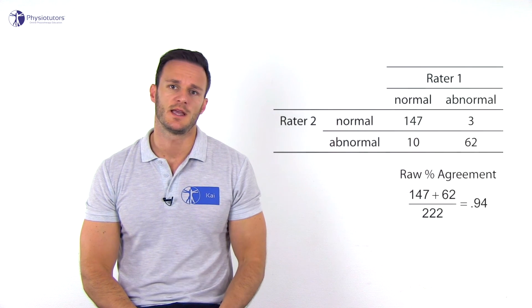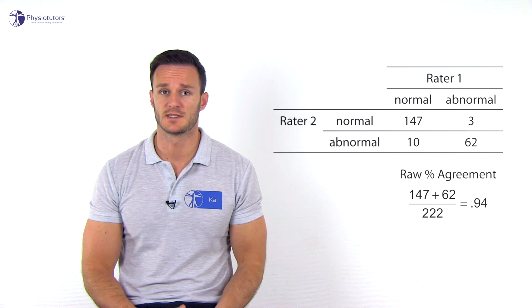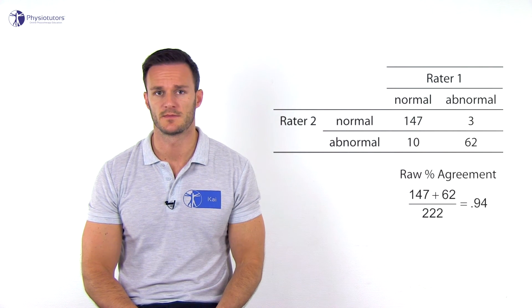There are several ways to express reliability. The easiest is the percentage of absolute agreement between repeated measurements. A very common measurement used for binary values — for example, yes/no — is the kappa value K. If more than two values are available as an outcome, a weighted kappa is used. If you want to learn more about the kappa value, click on the link in the top right corner.